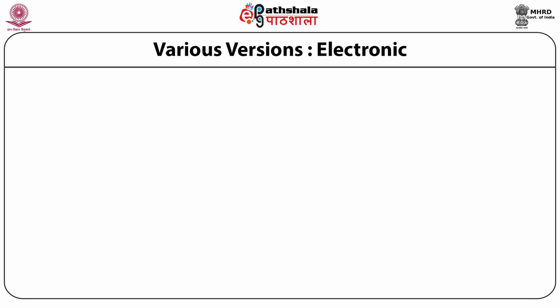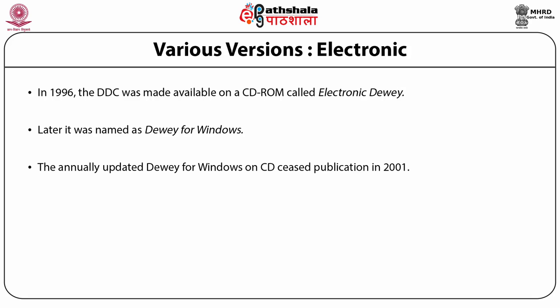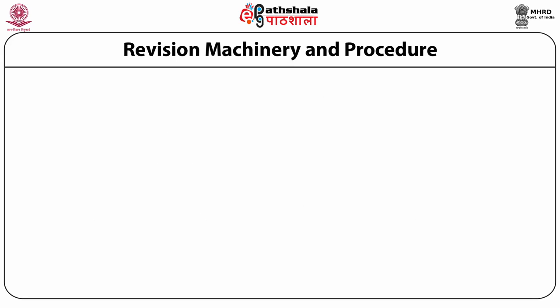Another version is the electronic version. The first electronic version started in 1996 when the DDC was made available on a CD-ROM called Electronic DDC. Later it was named DDC for Windows, and the annually updated DDC for Windows on OCLC's publication ceased in 2001. Since its 22nd edition, its electronic version is known as WebDDC. The abridged DDC is also known as Abridged WebDDC, first published in 2004. These are available on the internet only to licensed users on an annual basis. Electronic versions are much more enhanced with many added features, easy to apply and always remain updated.